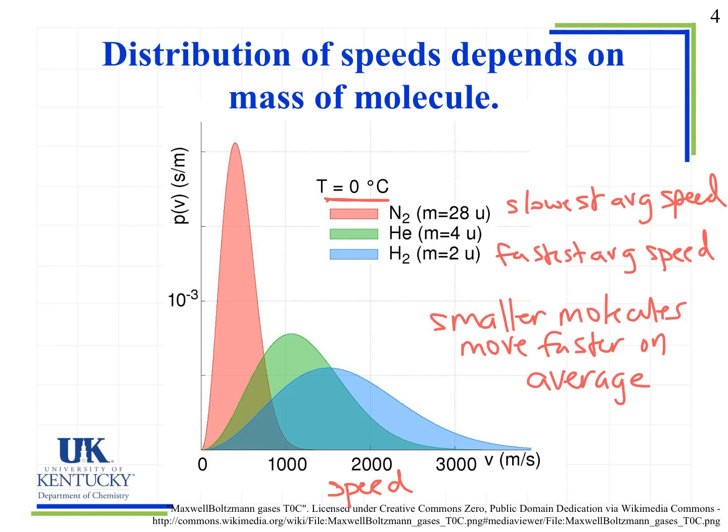Just like with the distribution of temperatures, we still see molecules, even the smallest molecules, moving very slowly and some moving faster. But we're worried about the average speed.